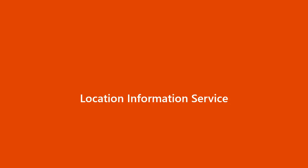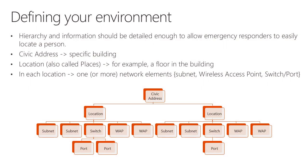Next is the location information service, or LIS. The first step is to define your environment and build out a hierarchy detailed enough to allow an emergency responder to easily locate a person. At the top of the hierarchy is a civic address, generally referring to one of your specific buildings. Underneath the civic address there are typically one or more locations, also called places in the Teams Admin Center, which often represent a floor in that building.